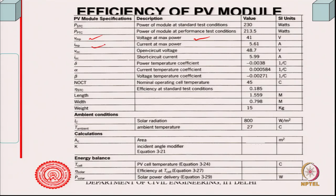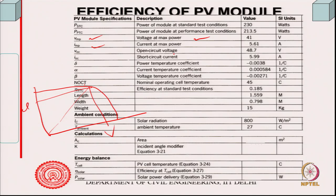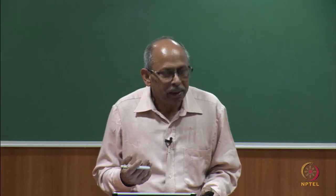Current at maximum power — this characteristic is found out in the production quality control laboratory. So maximum power, the corresponding current and corresponding voltage would be known to us. Open circuit voltage would be known to us, short circuit current would be specified. So if you are buying them, you can look into this kind of chart and find out what they are supplying.